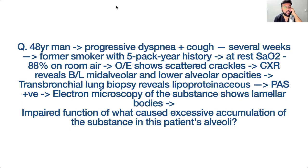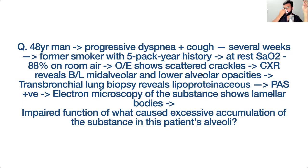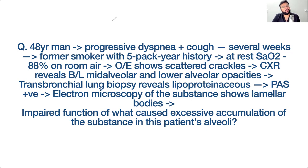A 48-year-old former smoker presents with progressive dyspnea and cough for several weeks. Saturation at rest is 88%. Examination shows scattered crackles. Bilateral mid and lower alveolar opacities are seen. Lung biopsy shows PAS-positive lipoproteinaceous material and electron microscopy reveals lamellar bodies. What is the diagnosis?